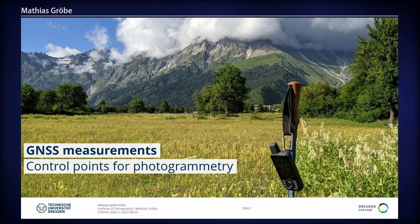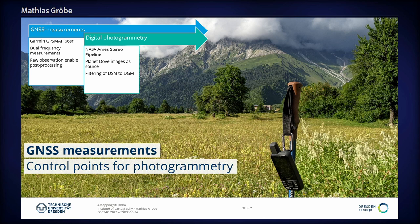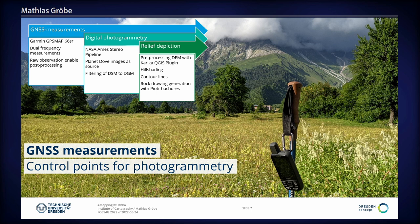We also need a customized digital elevation model, so we need control points. How to measure? Using professional survey equipment is not practical on these mountains. We go for a better GPS device — the Garmin GPSMap 66SR — which measures on dual frequency and you can get the raw observations out of it. With post-processing, you get below one meter accuracy, which is quite enough for us. We use the NASA Ames Stereo Pipeline, as in the last presentation. We received images from Planet through a grant, to make our own digital surface model, and we are building our own digital elevation model for this area, which we will visualize with QGIS using the Carto plugin and a tool for making rock edges called Piotre.